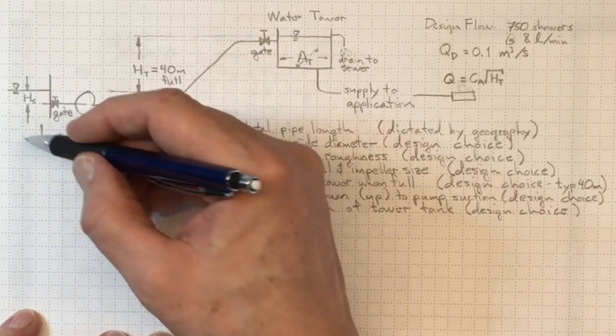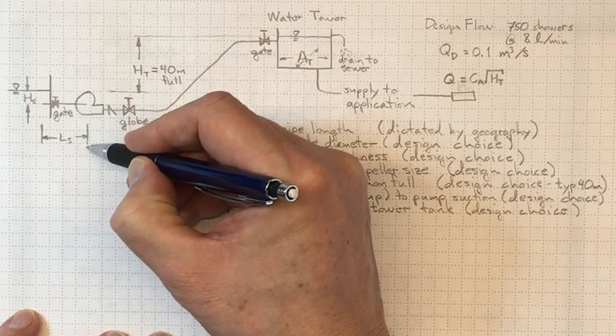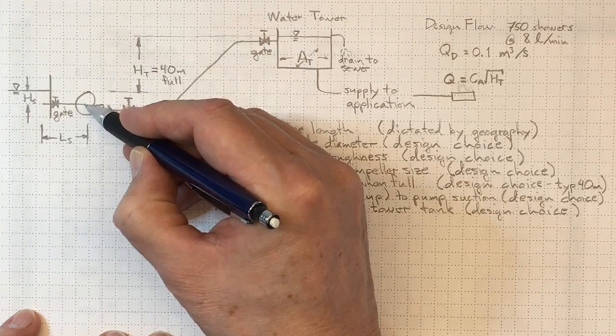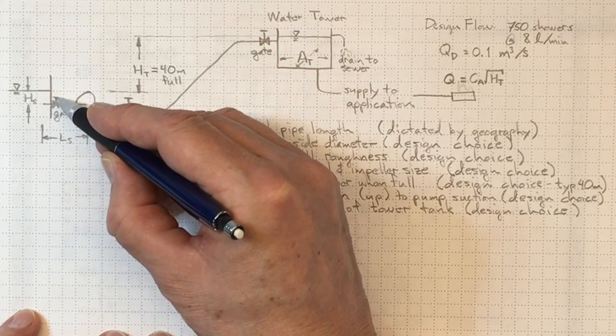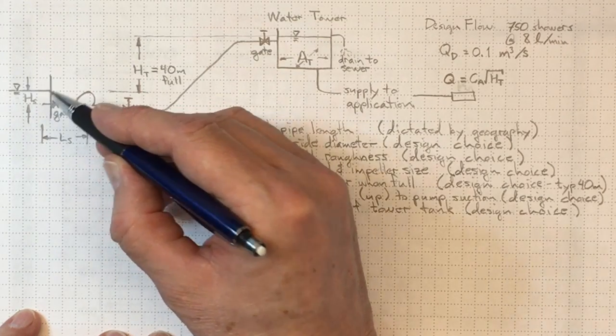And we've got a distance LS for the pipe getting into the suction side of the pump and a gate valve on this suction side of the pump as well as this re-entrant entry.